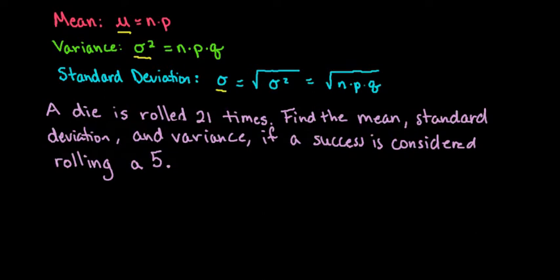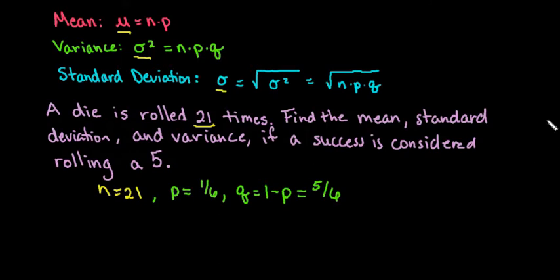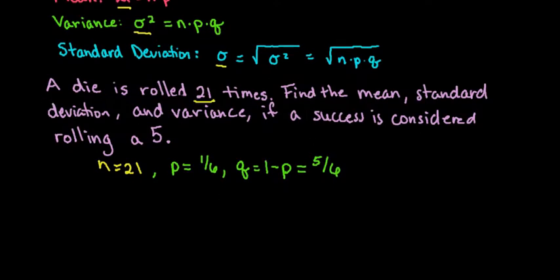I'm also going to discuss what would be considered an unusual event. Before you start, you always want to identify your important information. n is the number of trials, so n is 21. p is the probability of success — the probability of rolling a 5 is 1 out of 6. And q, the probability of failure, is always 1 minus p, which in this case is 5 sixths.